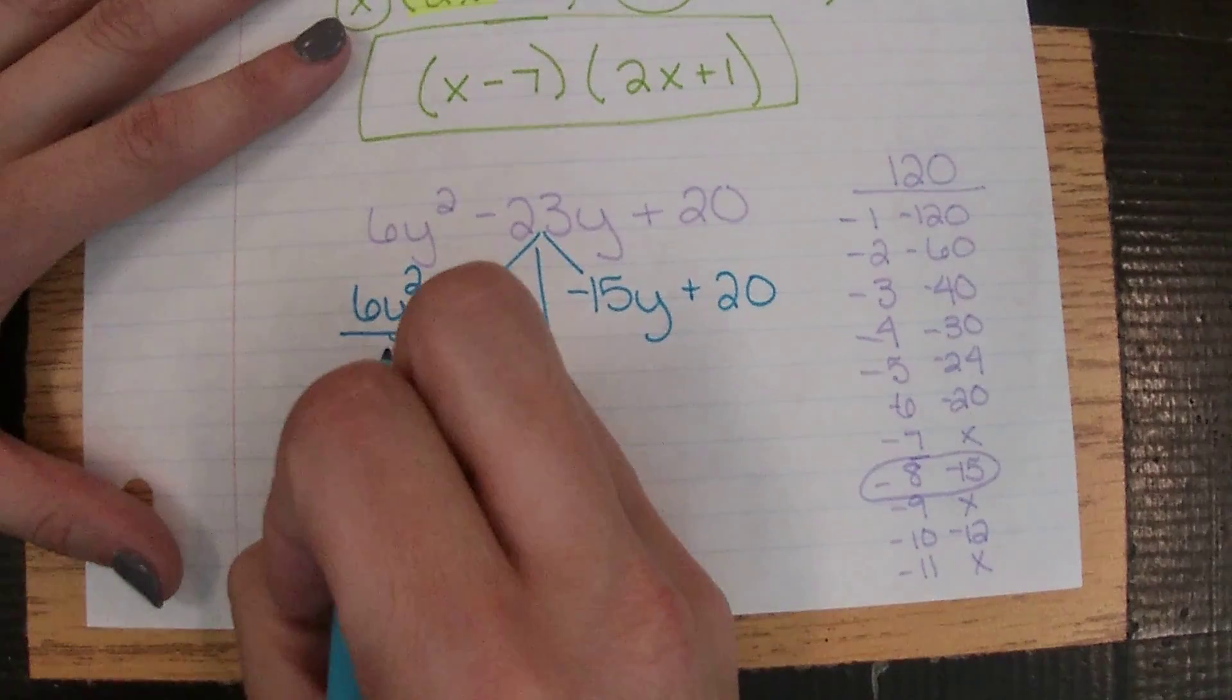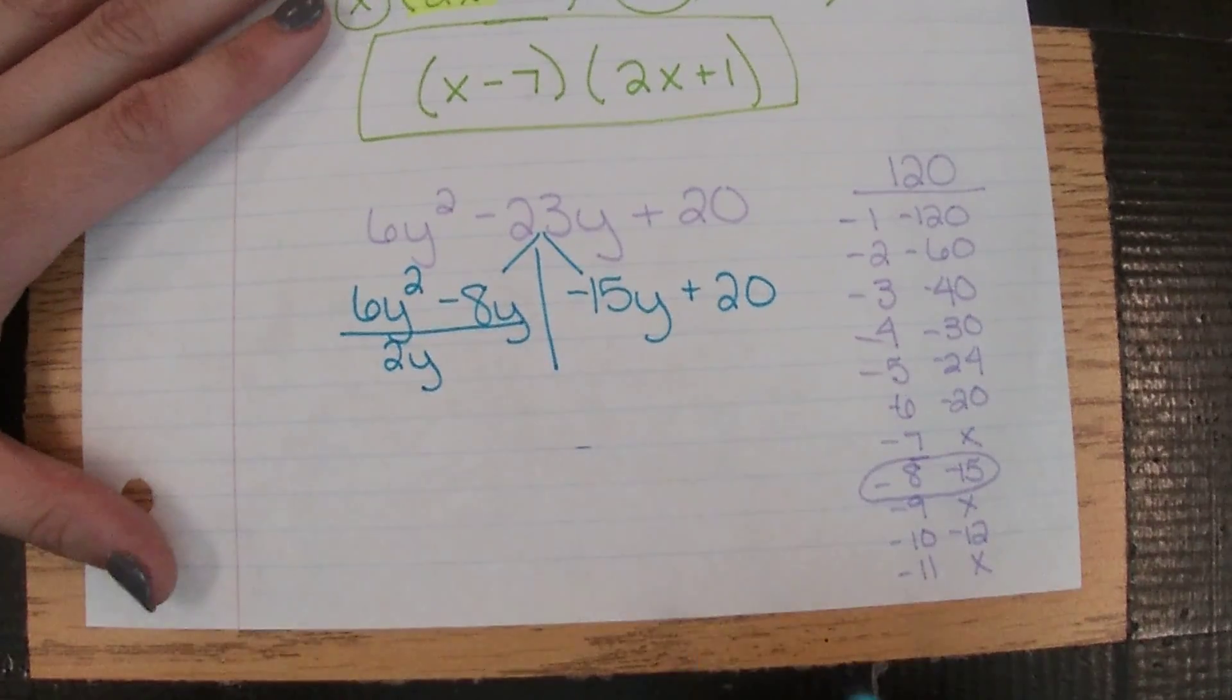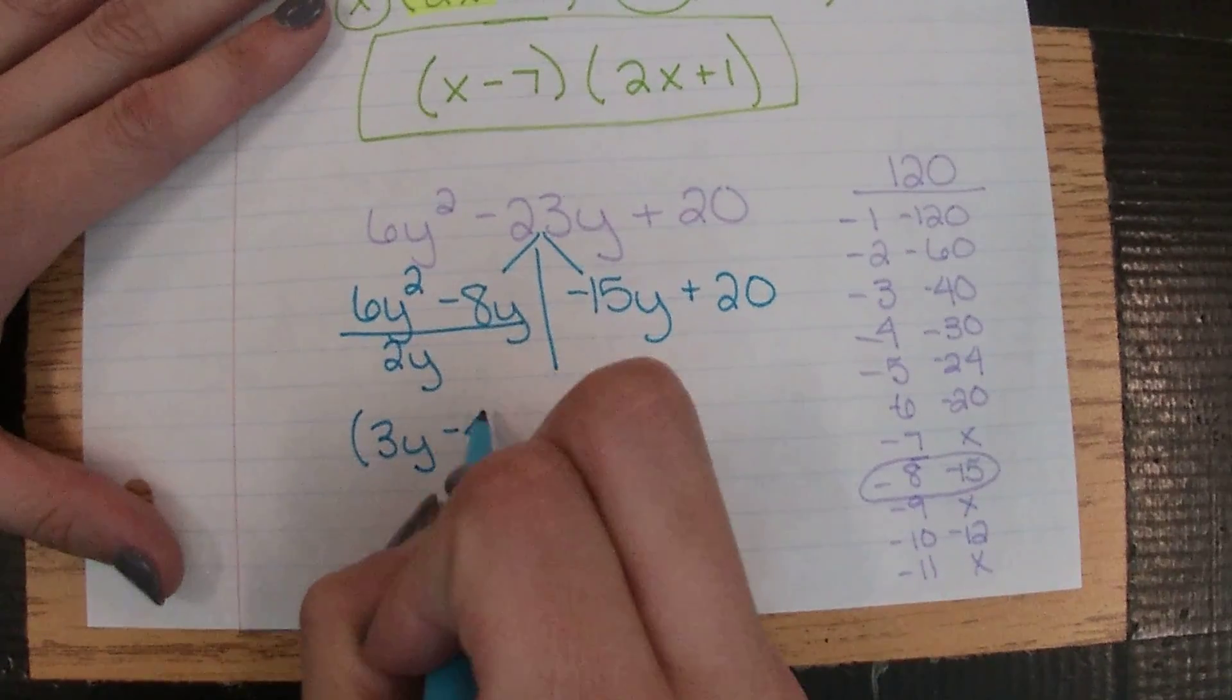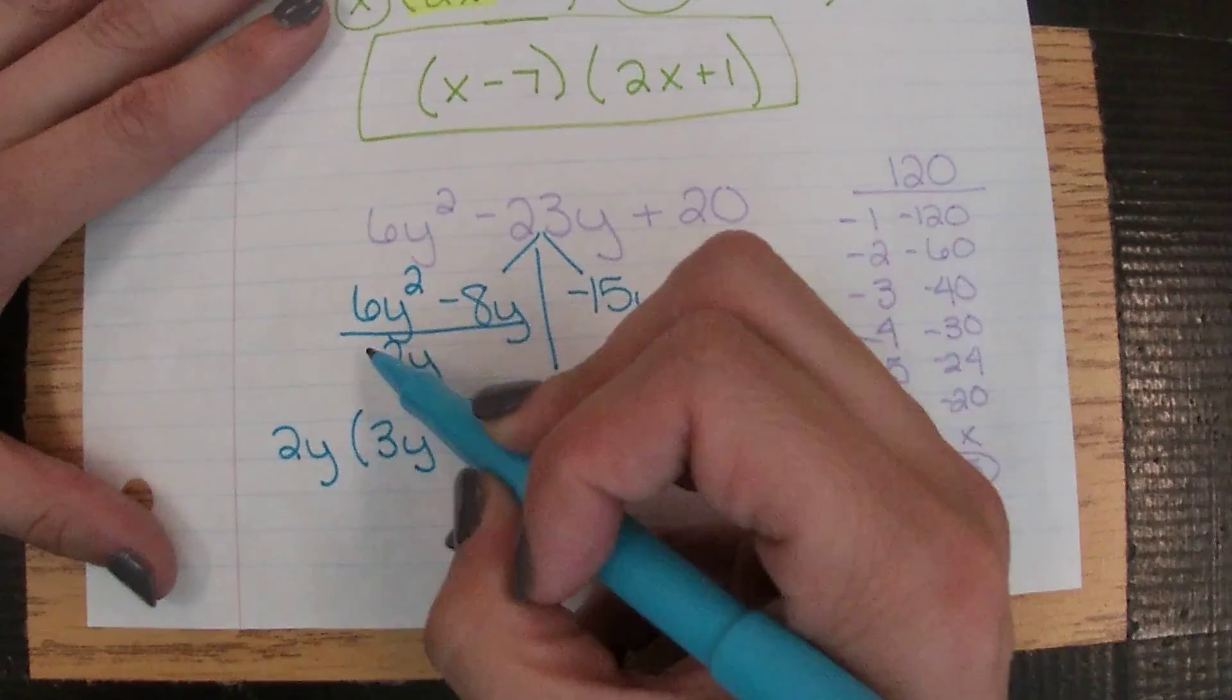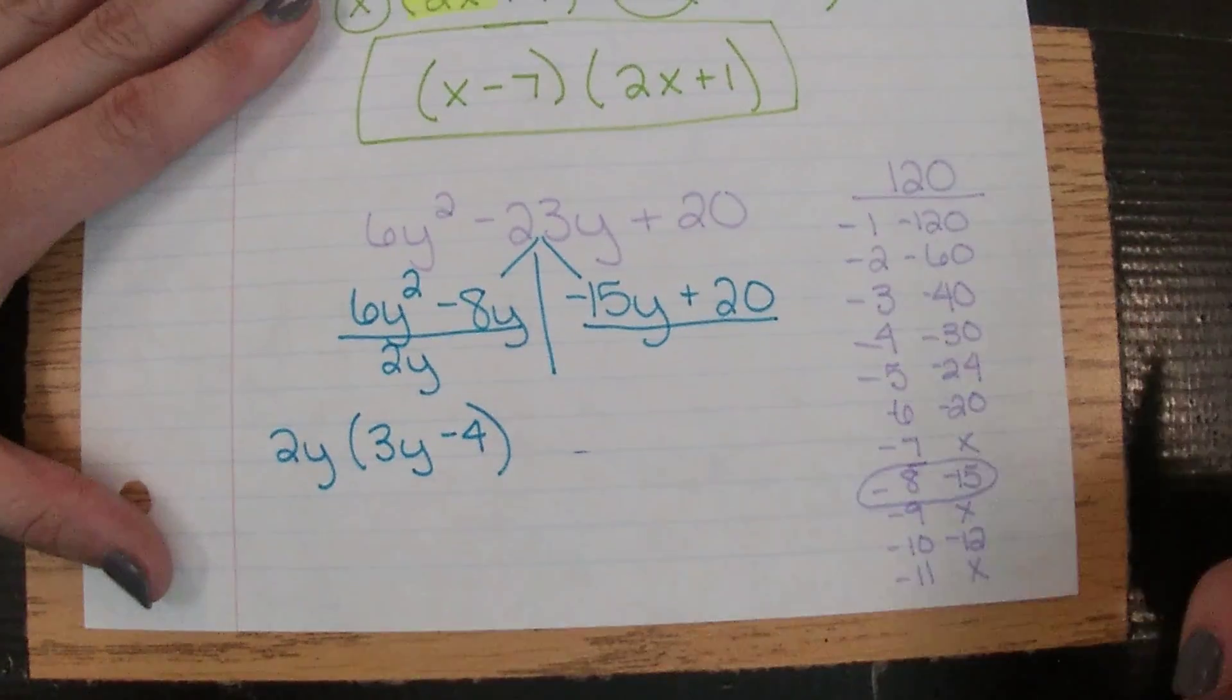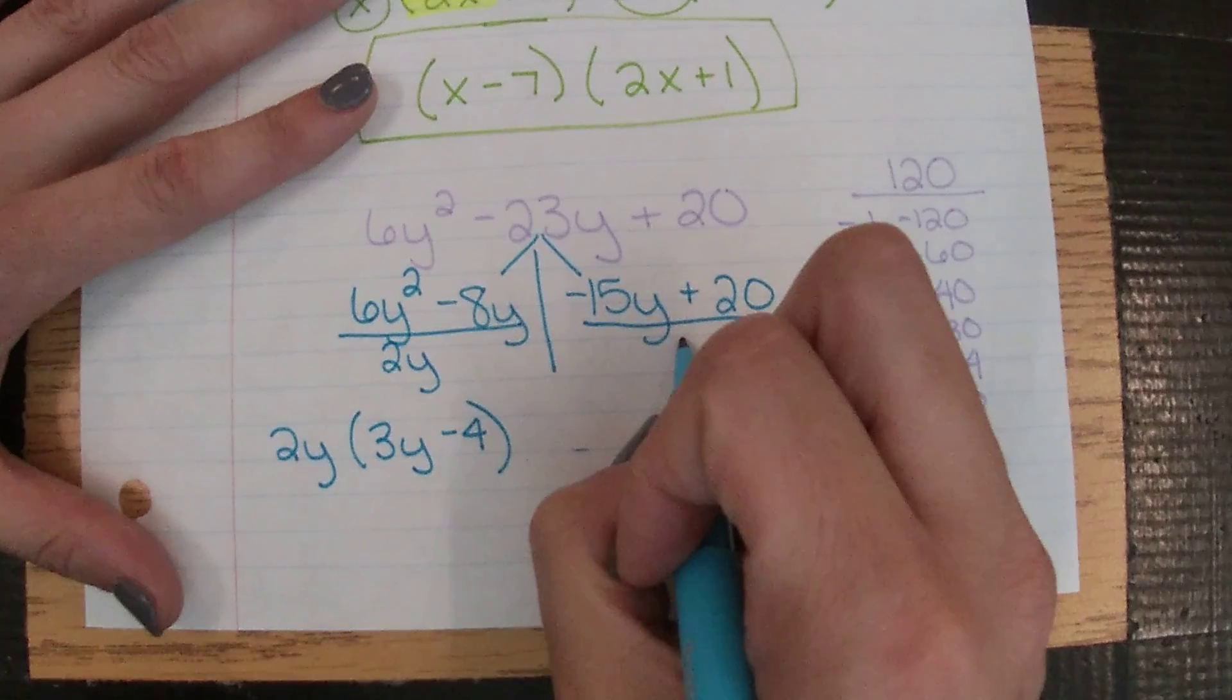So 6 and 8 have a GCF of 2. They both have the y, the smaller one is exponent of 1. I'm dividing: 6 divided by 2 is 3, 8 divided by 2 is 4. I'm subtracting the exponents—you can always go back if you forget the info on how to do that.